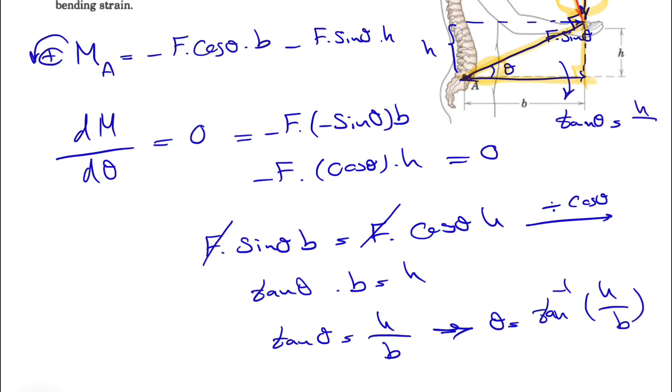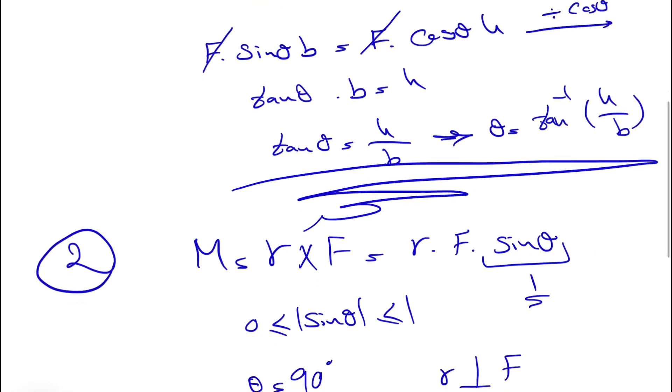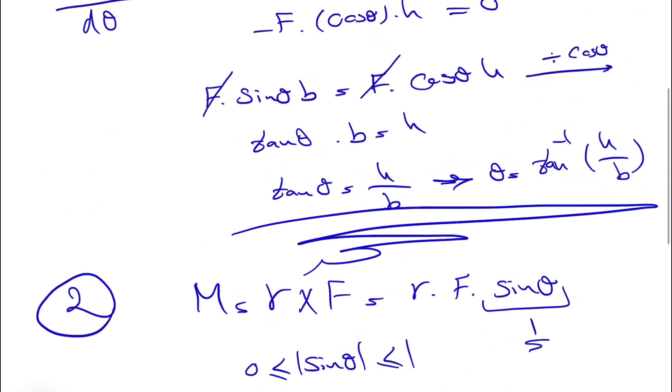Which will be basically h over b, and the rest would be similar. The tangent of theta would be tangent inverse of h over b. So definitely the second way is the easiest way.